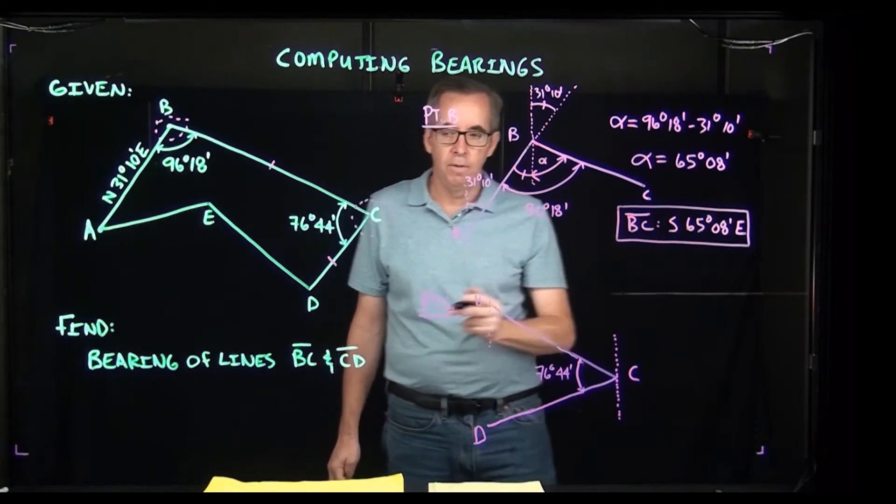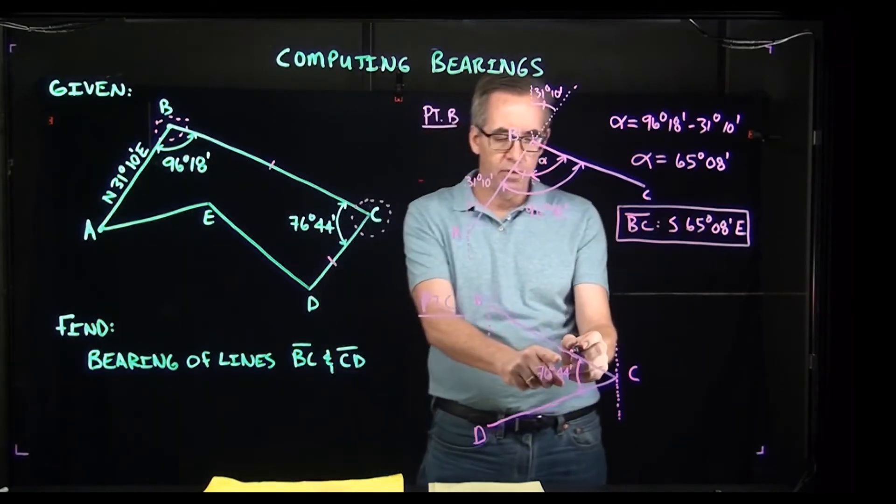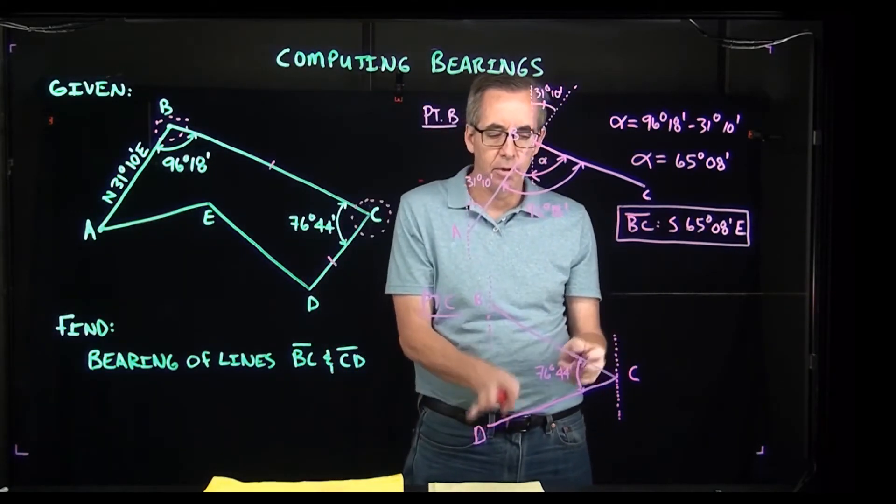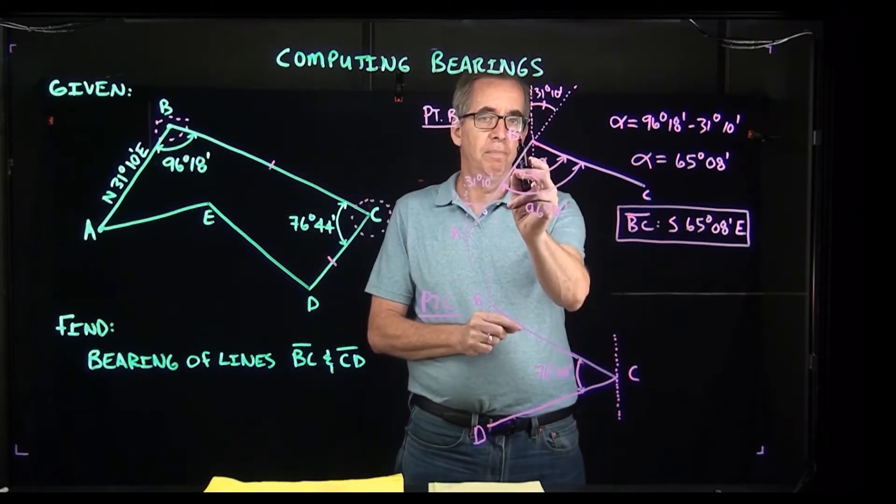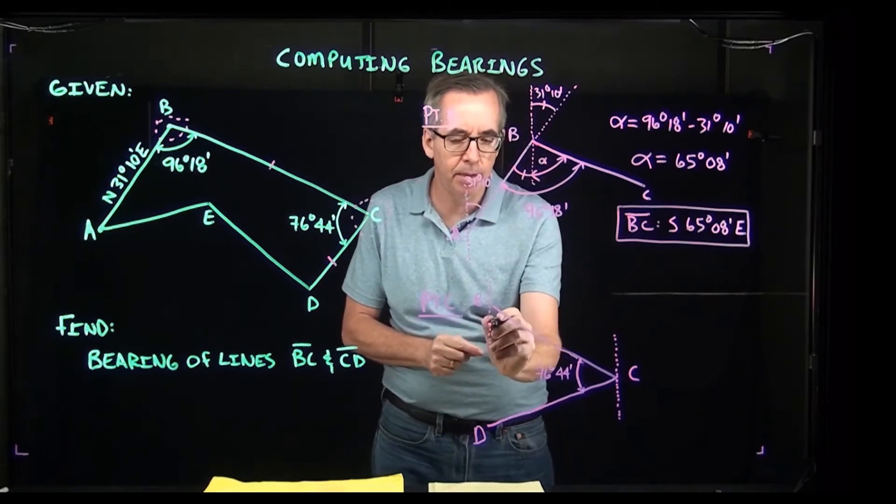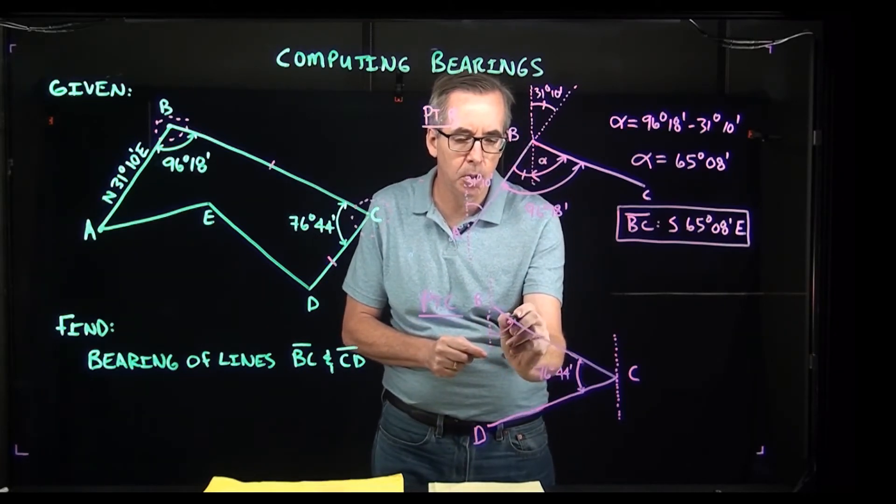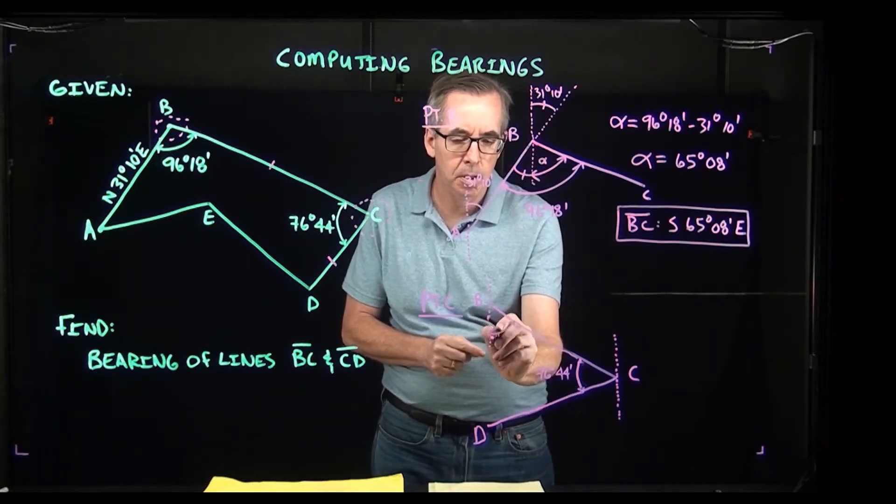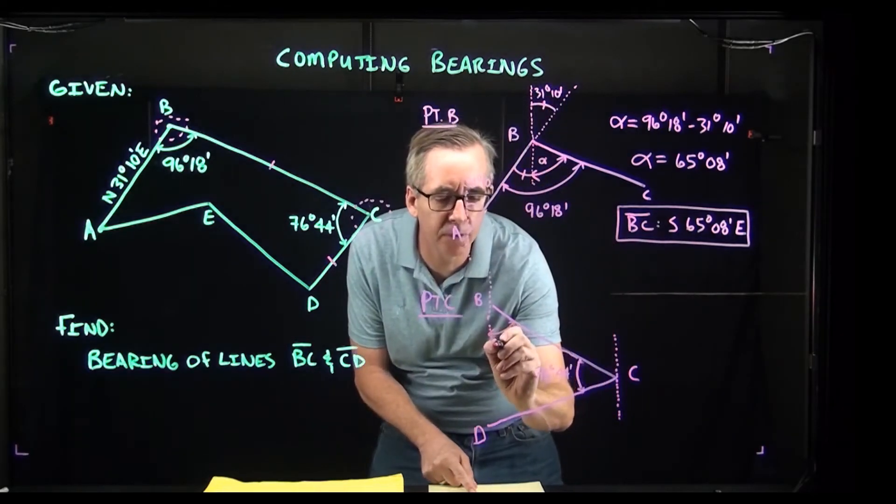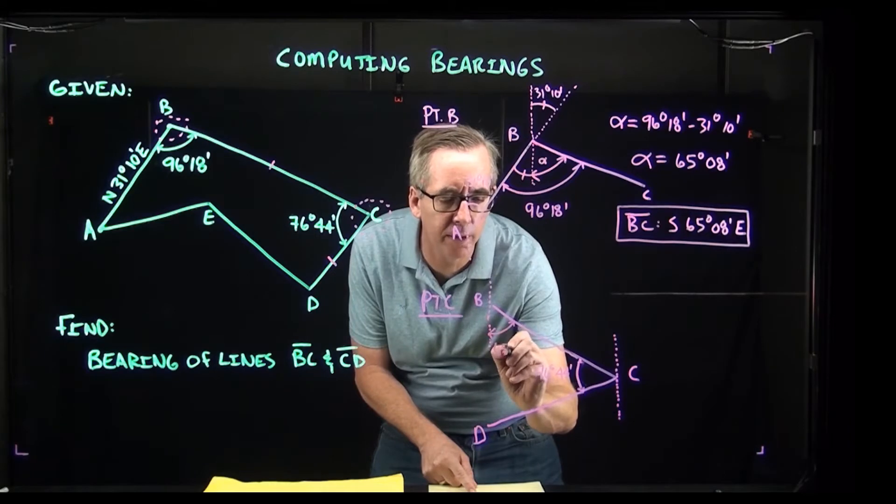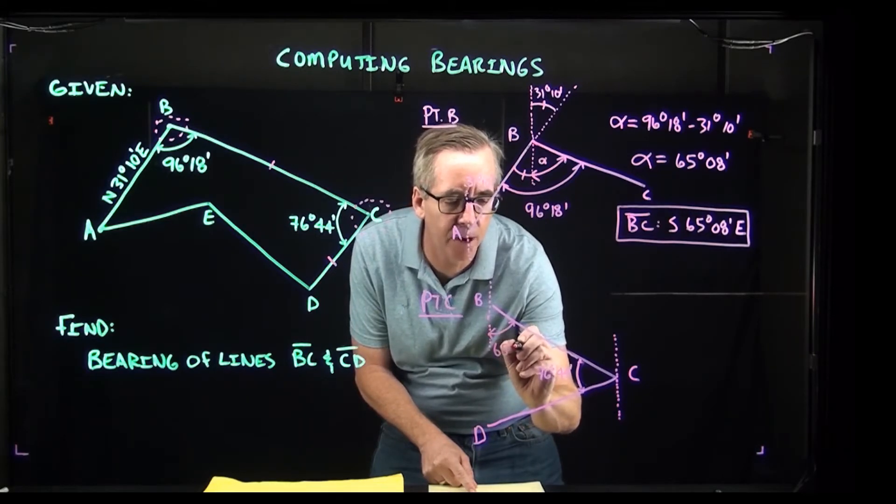The bearing for BC, at point C I have an angle of 76 degrees 44 minutes, an internal angle we're good there. The bearing that we just calculated for BC, that's this angle coming in right here. That angle is the 65 degrees 08 minutes that we just computed, so we needed the angle there from the previous problem, which can be obviously problematic if you make a mistake on the first one then unfortunately the error is going to carry through.